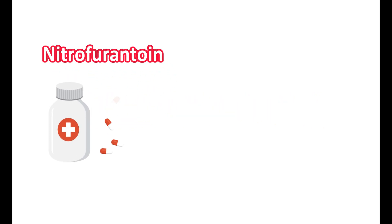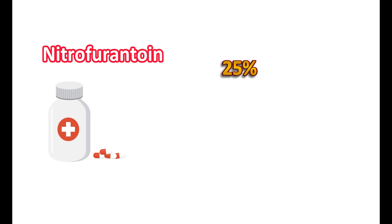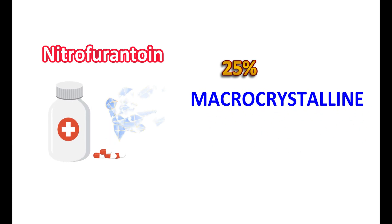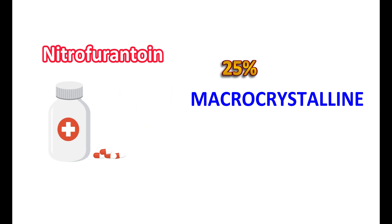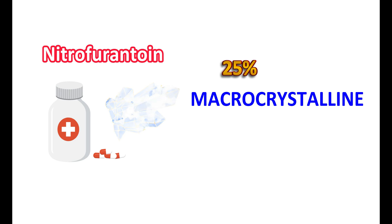First of all, let us see what is Macrodantin form. Each capsule of Nitrofurantoin contains two forms of this medication. Around 25% of this Nitrofurantoin is available as large crystals and it is called the macrocrystalline form. This macrocrystalline form has a slow rate of dissolution, which reduces the overall rate of dissolution of the capsule.